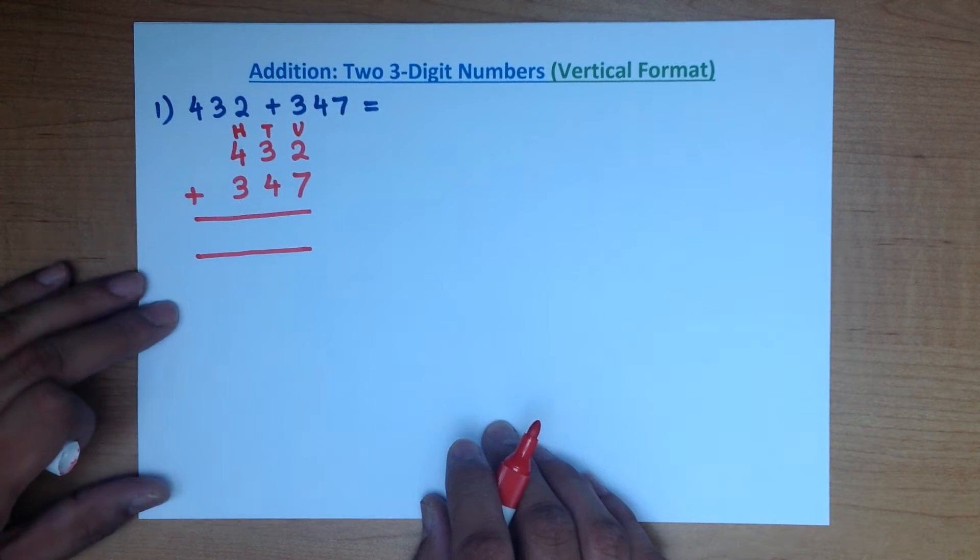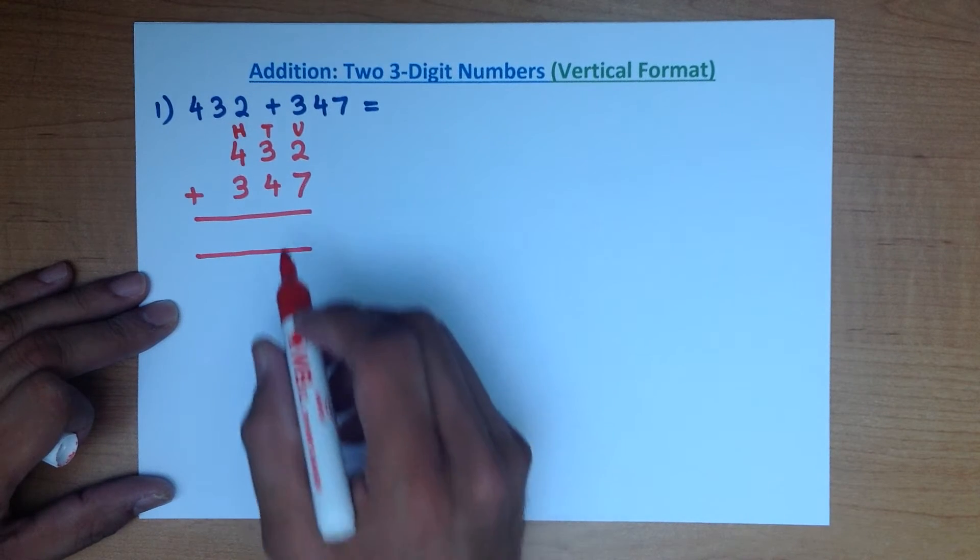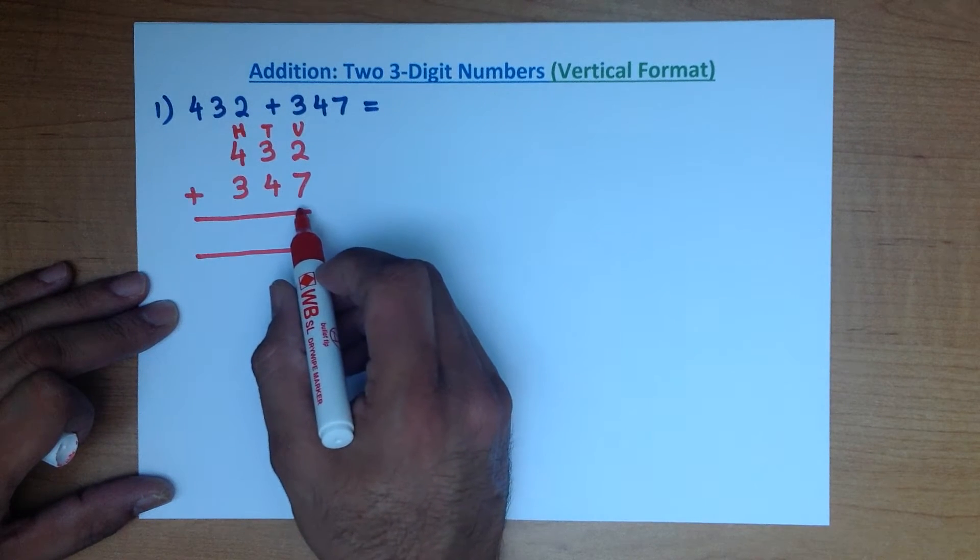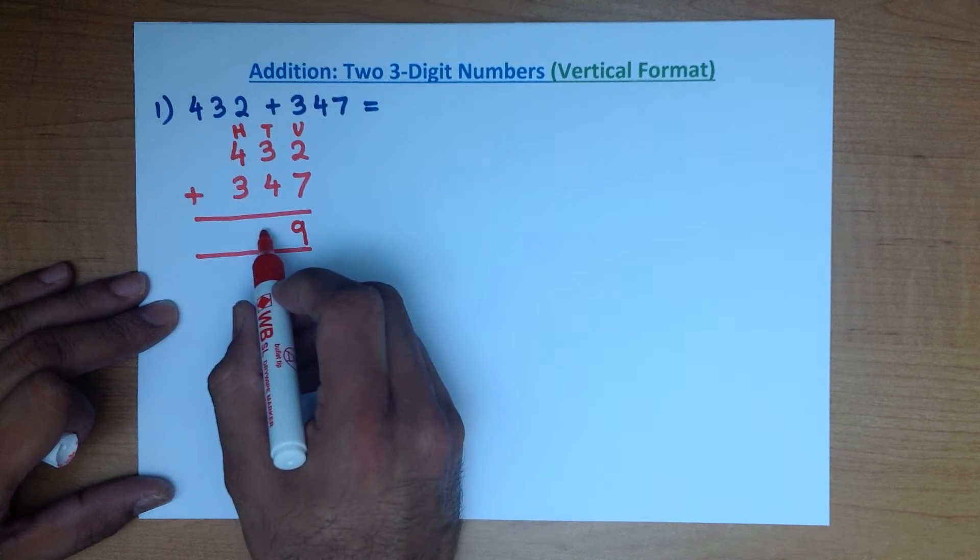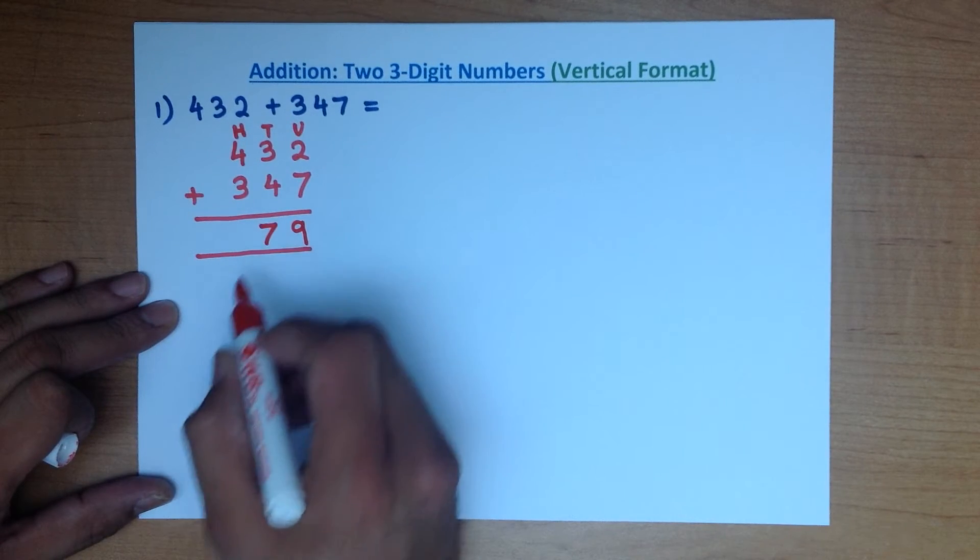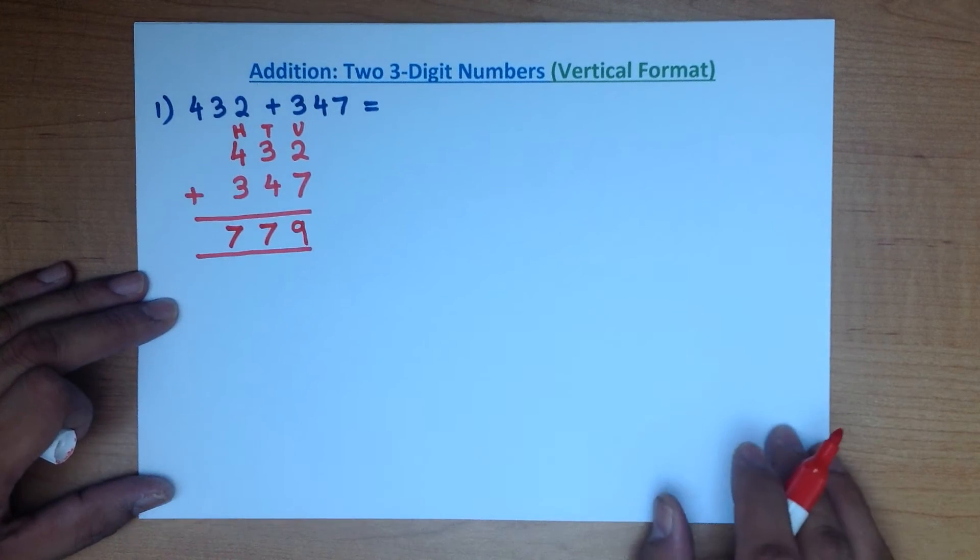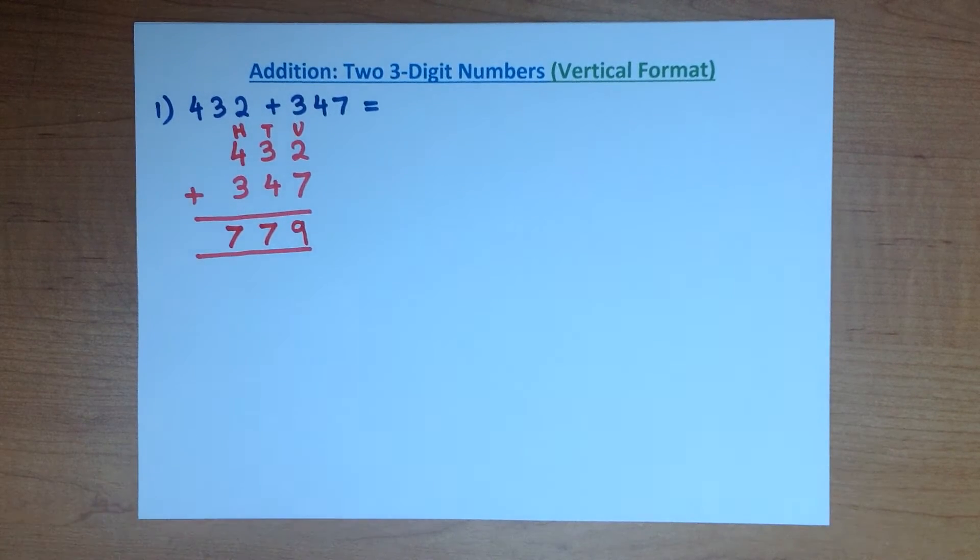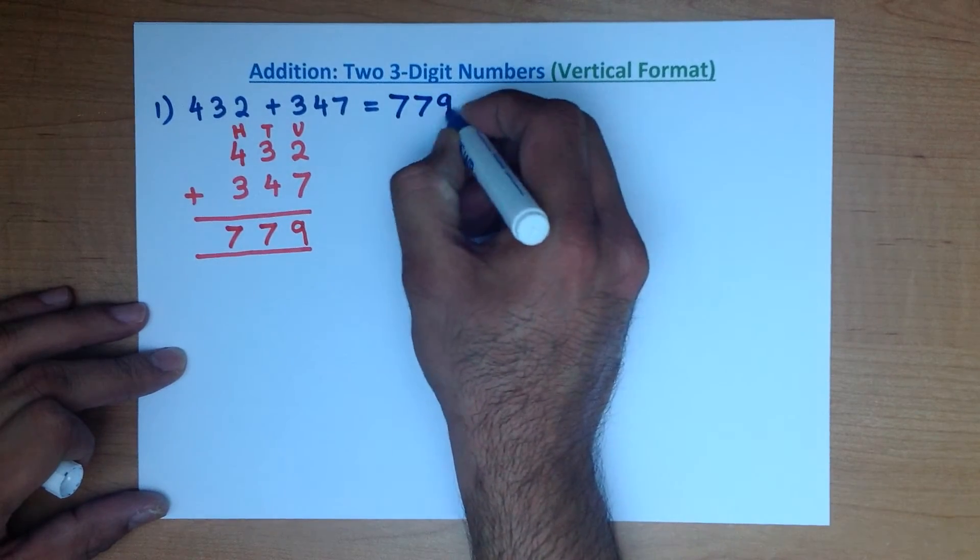And what we do is we add them column by column starting with the column on the right hand side. 2 plus 7 is 9. 3 plus 4 is 7. 4 plus 3 is 7. And we have our answer. 432 plus 347 is 779.